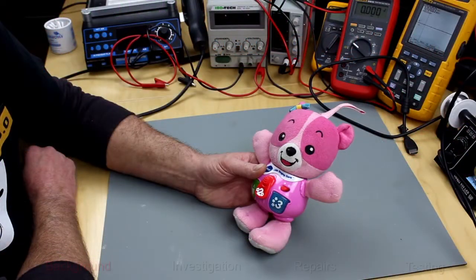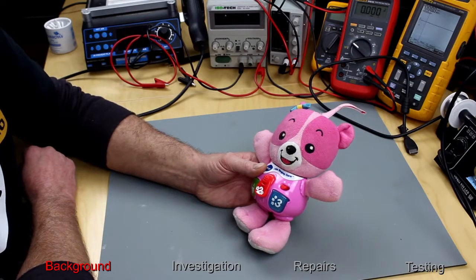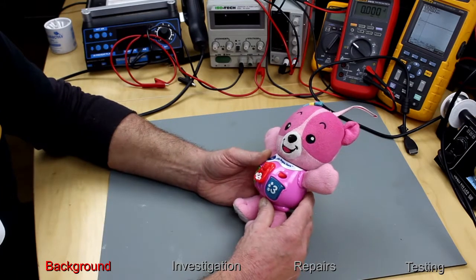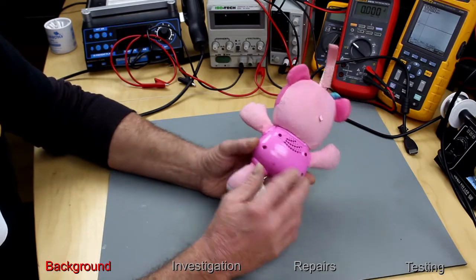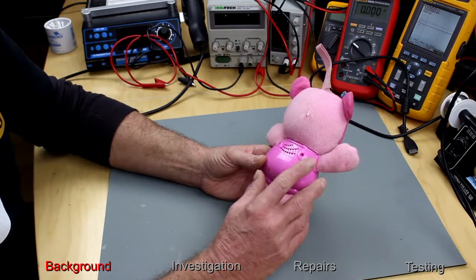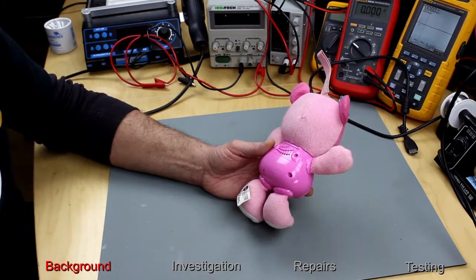Welcome back to the Retro Tech Repair Shop. Today I have a VTEC Little Singing Cora soft toy. I'm not sure if it's a bear or a cat. Bought off of eBay, not working. So let's open it up and see what we've got.